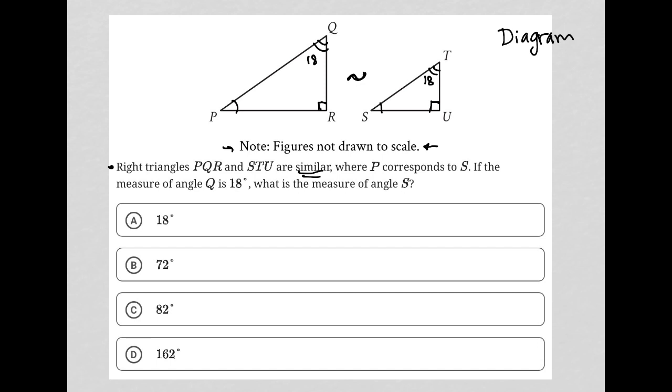Now we also know that all three angles of a right triangle or of any triangle have to add up to 180. So we already have 90 and we have 18. Together that is 108, which means we need an additional 72 to get to 180, which means that angle S is 72 and angle P is also 72.